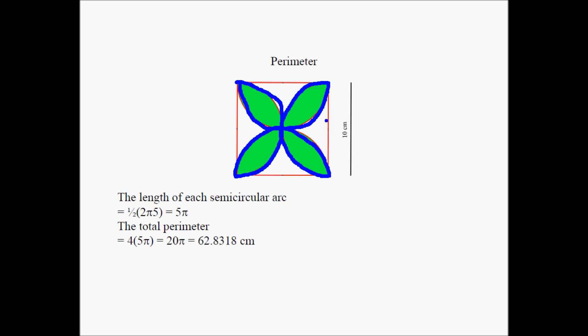The region is surrounded by 4 semicircular arcs. Now, each semicircular, the length of a whole circumference of a circle is 2 pi r, r is 5, but I only want half a circle. Let's say I'm trying to find out the length of this semicircular arc. The whole circle, if I could complete it like this, would be 2 pi r, where r is 5. But I want to divide it by 2 or multiply it by half because I only want half of the semicircle. So, it will turn out to be 5 pi. So, each semicircular arc must be 5 pi centimeters long. I have 4 of them, so I multiply 5 pi by 4, I get 20 pi. Once again, if you want your answer in decimal, if you multiply 20 by 3.142, you're going to get 62.8318. That's your final answer.